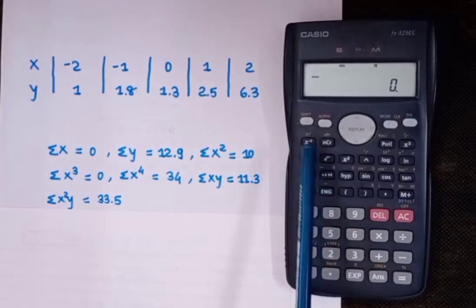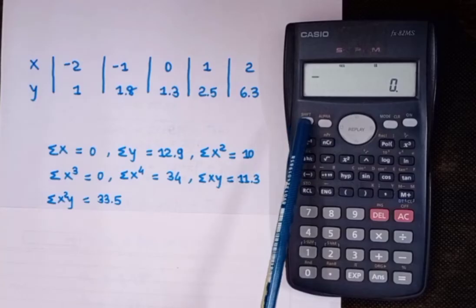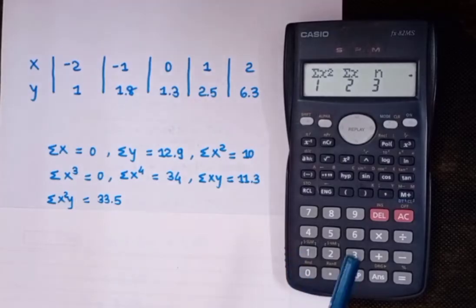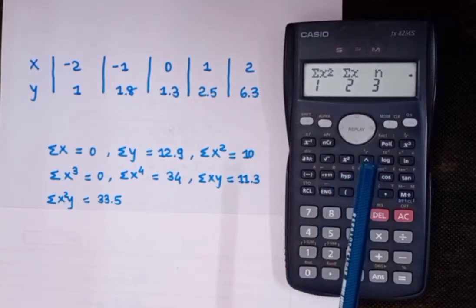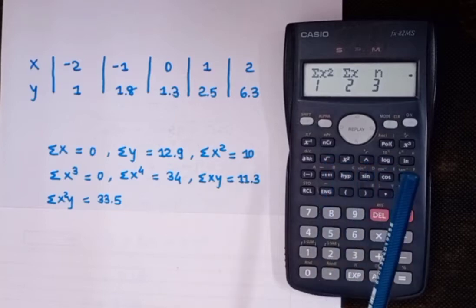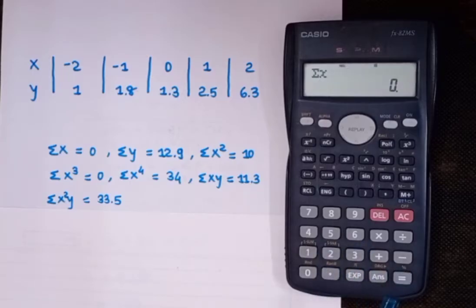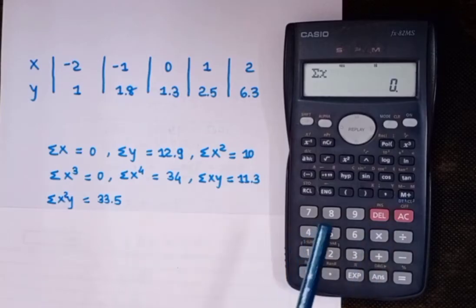To get the values of a, b, and c, press Shift then S-sum (press 1). From here you can see Sigma X, Sigma X², Sigma X, and N. To find Sigma X, press 2 then press equals — we're getting 0. So Sigma X = 0.